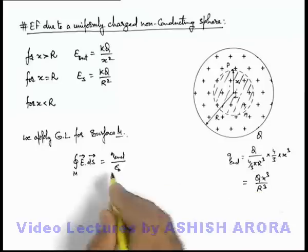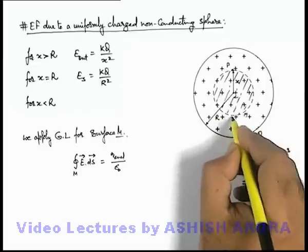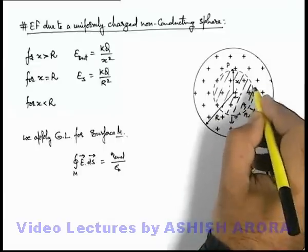So in this situation if we substitute the value, as we can see at every point of this Gaussian surface electric field will be radially outward.